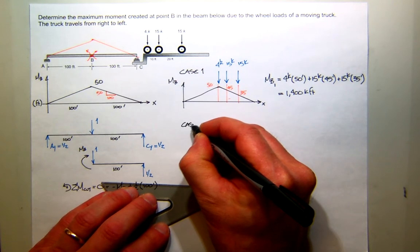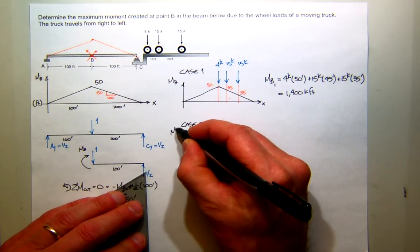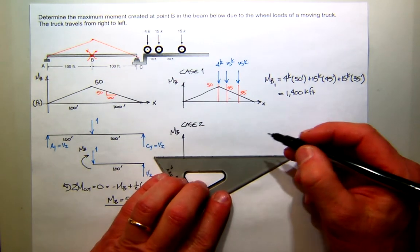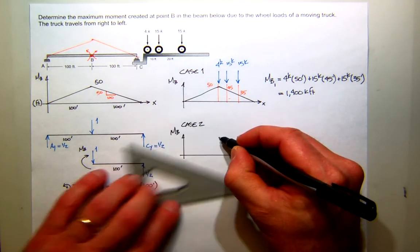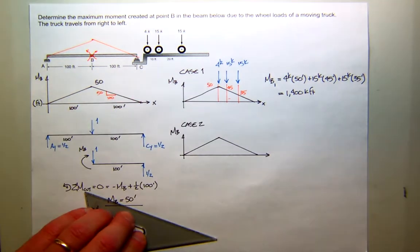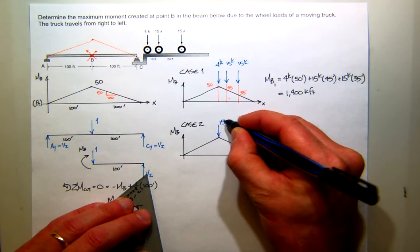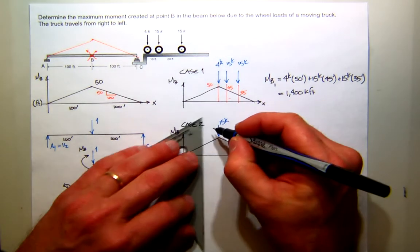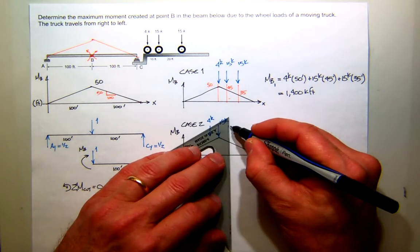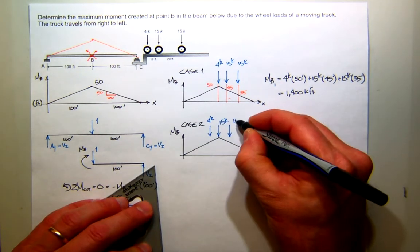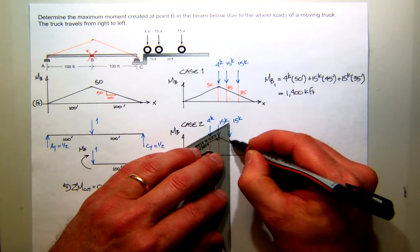Case 2. I'll redraw my influence line. And now, my truck drives over, and the second force in that sequence, the 15 kip force, stops at the maximum value. That means 10 feet in front, I have my 4 kip force, and 20 feet behind, I have the last force, which is also 15 kips.